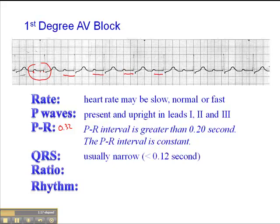The QRS is usually narrow, so less than 0.12 second. The ratio will be 1 to 1, and the rhythm will be regular.